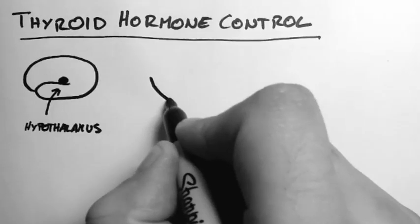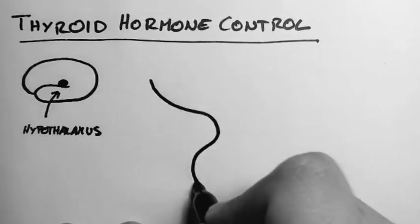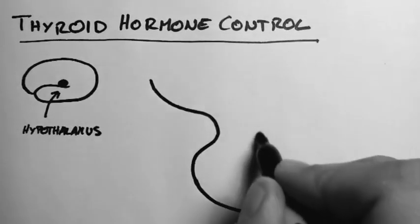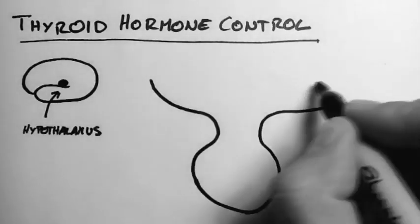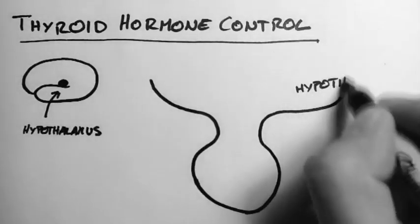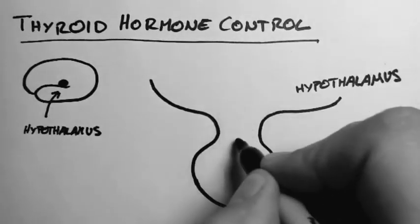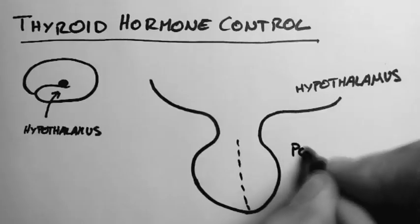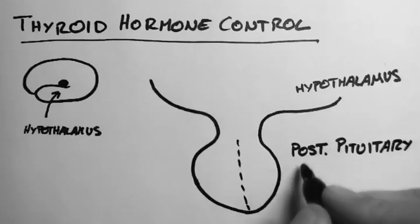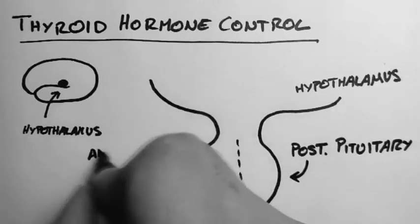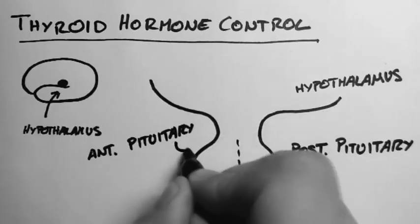So I drew it out a little larger here. Here's the hypothalamus up here, and hanging down from it is the pituitary. This is a gland that sits within the base of the brain. This side is the posterior pituitary, and this side is the anterior pituitary, and we'll be looking at the anterior pituitary.